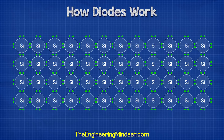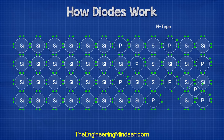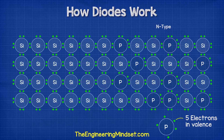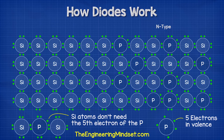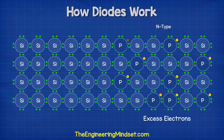When we add in the N-type material such as phosphorus, it will take the position of some of the silicon atoms. The phosphorus atom has five electrons in its valence shell. So as the silicon atoms are sharing electrons to get their desired eight, they don't need this extra one. So there are now extra electrons in the material and these are therefore free to move.